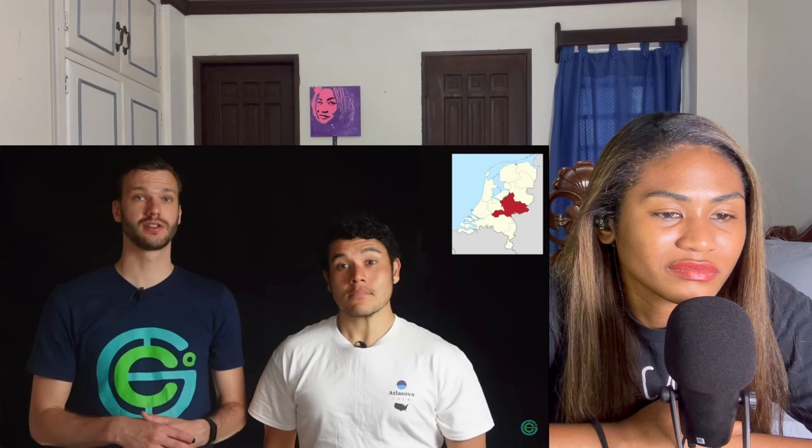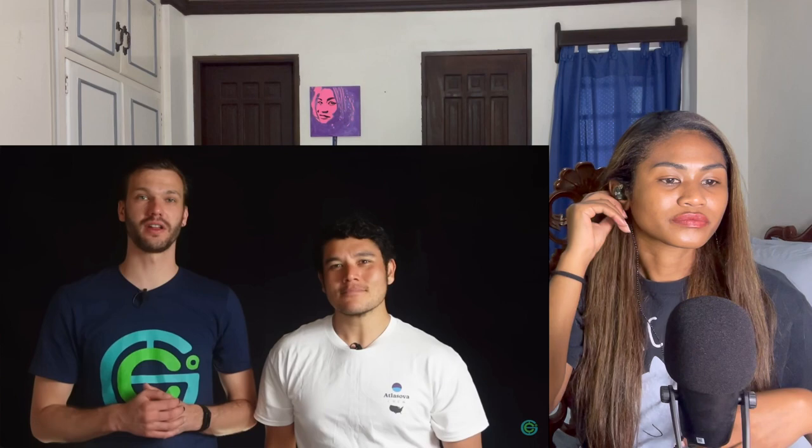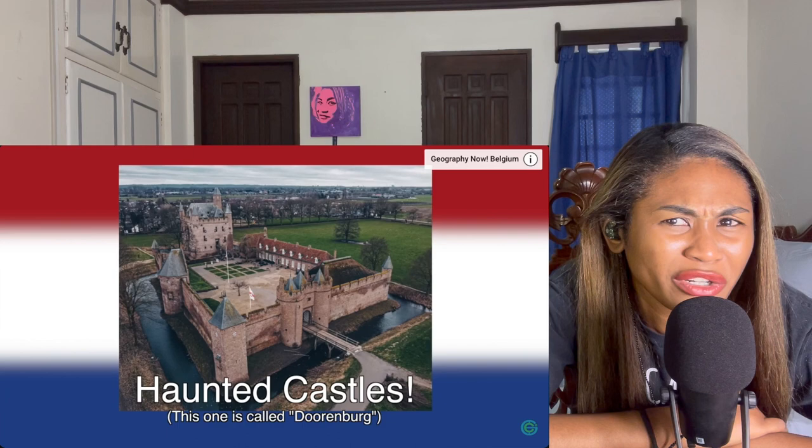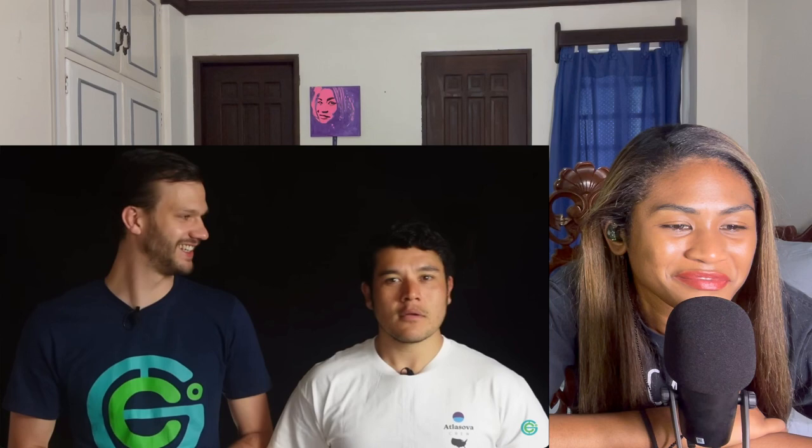Gelderland — it's like the wild card province; you never know what you're going to get. It's the largest province by area. The Veluwe is one of the largest nature preserves in the Netherlands, with actual wildlife. It's also home to the largest waterfall in the Netherlands, the Loenen waterfall, a stunning 15 meters high (50 feet). Nijmegen, located here, claims to be the oldest city in the country, dating back to Roman times about 2,000 years ago. Many castles and palaces are supposedly haunted and abandoned — there's a little bit of everything here.